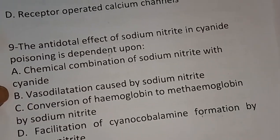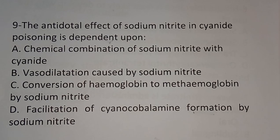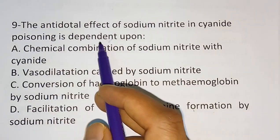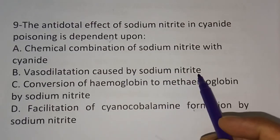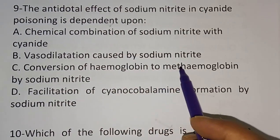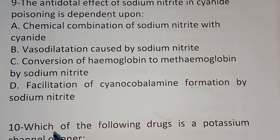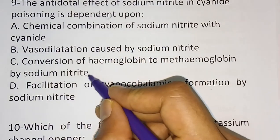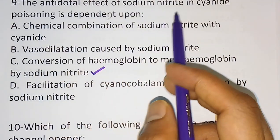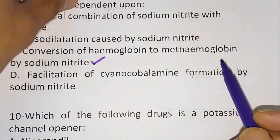Question nine: the antidotal effect of sodium nitrite in cyanide poisoning depends upon which mechanism? Options: A) chemical combination of sodium nitrite with cyanide, B) vasodilation caused by sodium nitrite, C) conversion of hemoglobin to methemoglobin by sodium nitrite, D) facilitation of cyanocobalamin formation. The correct answer is option C.